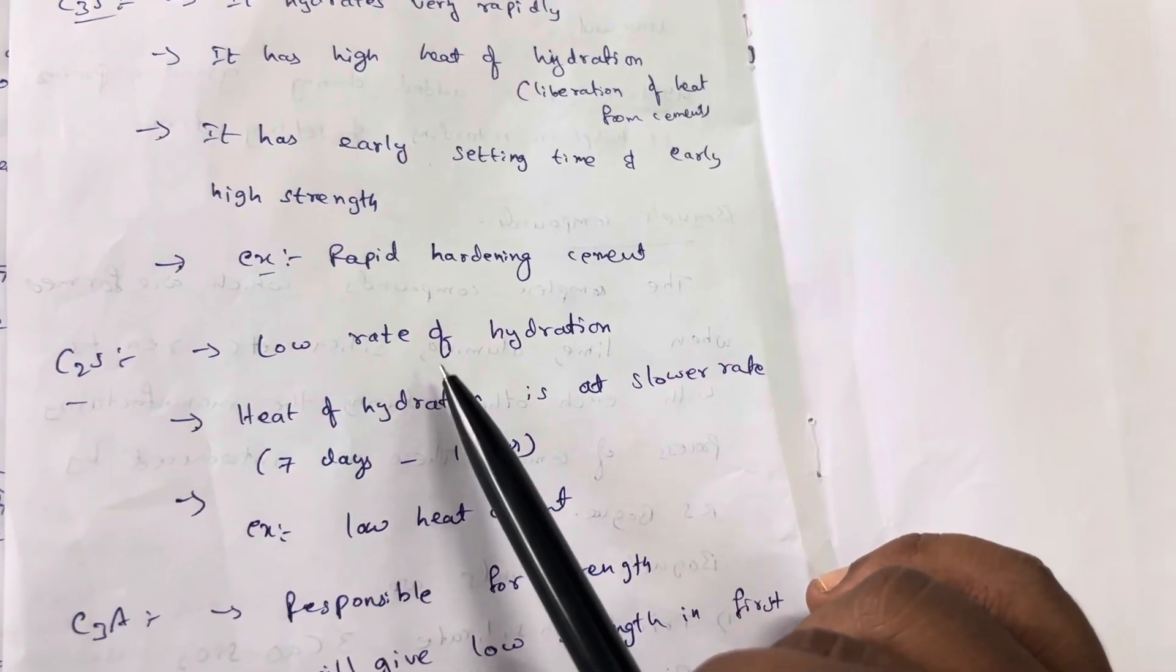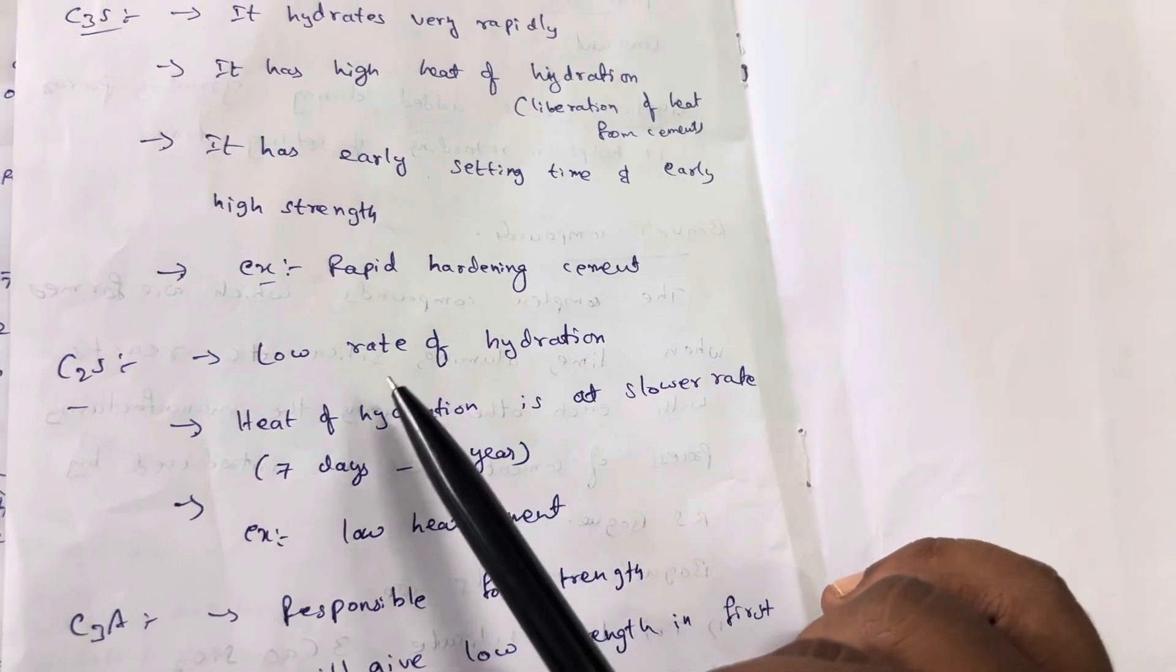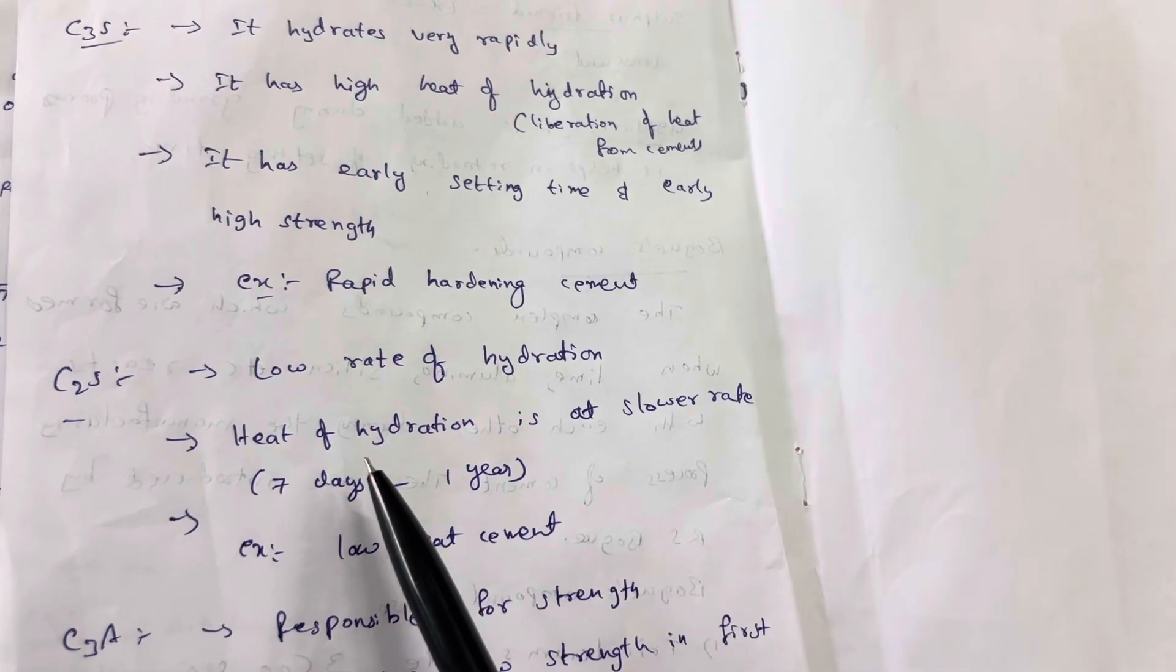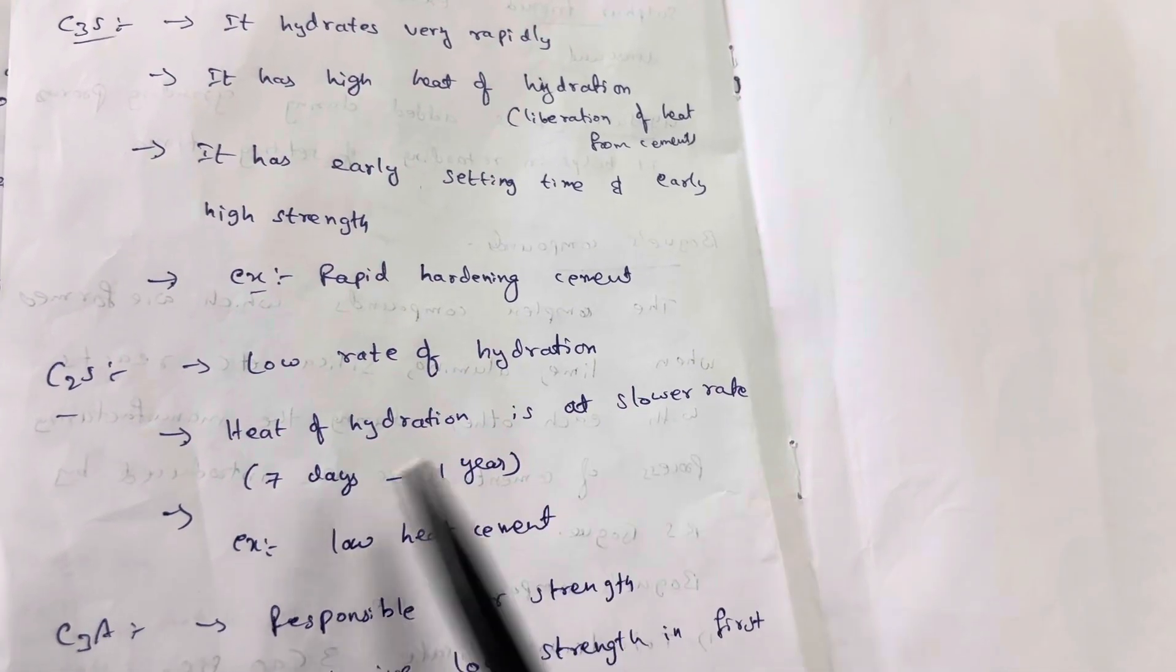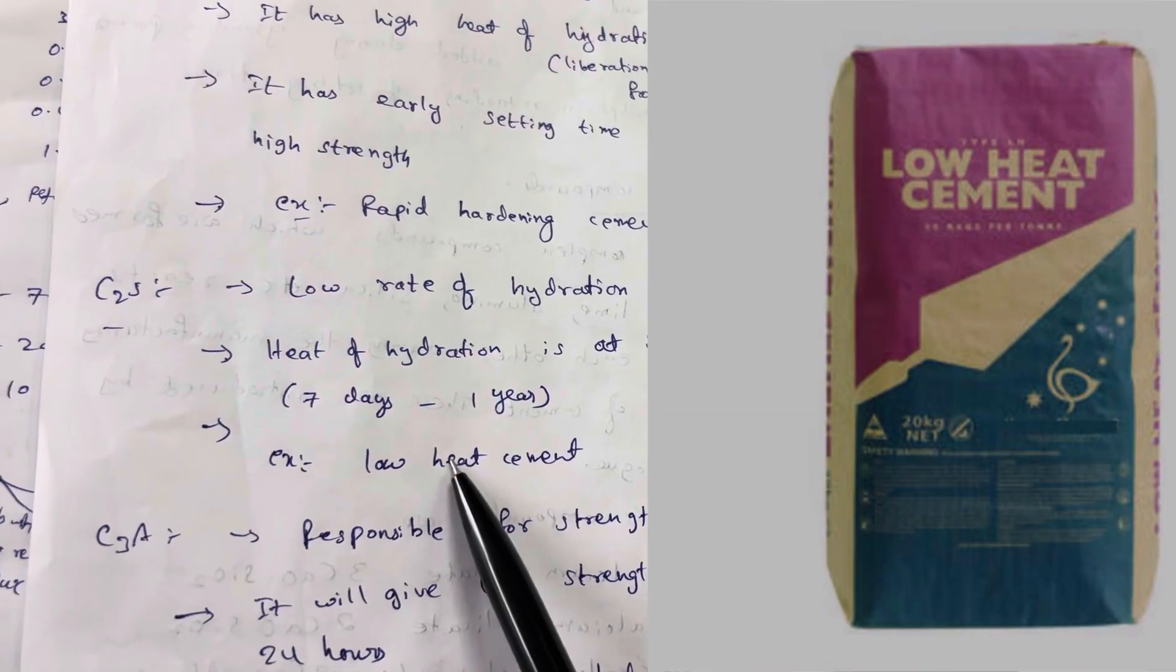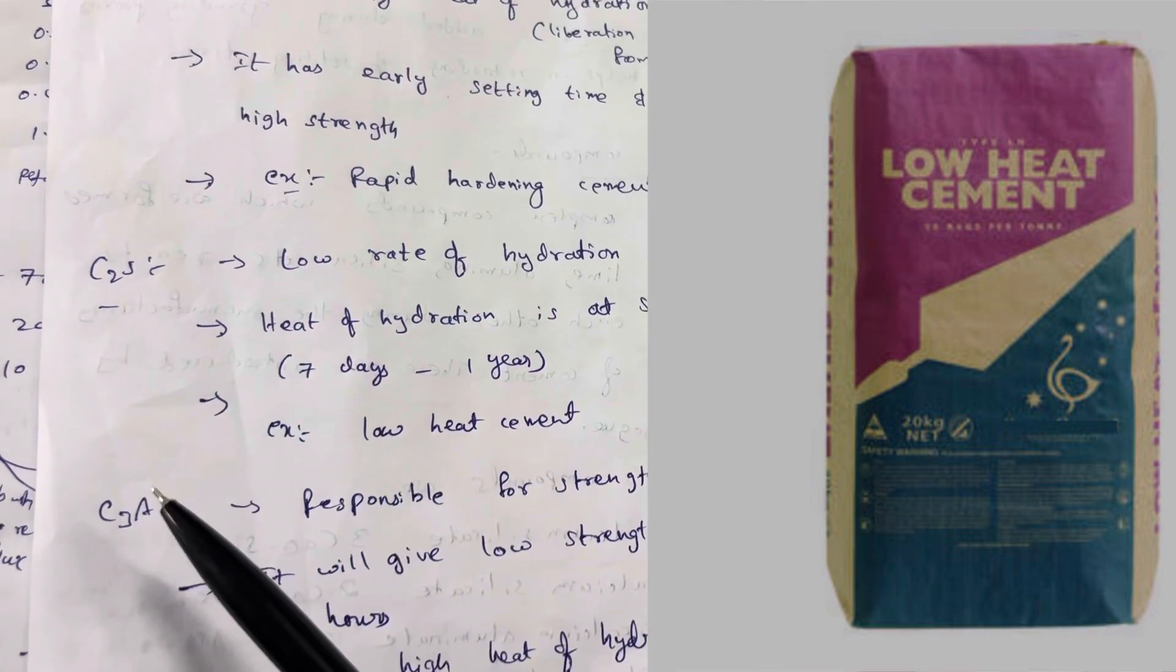In C2S, there is low rate of hydration. Heat of hydration is at a slower rate. Liberation of heat from cement is also very slow, from 7 days to 1 year. An example is low heat cement.